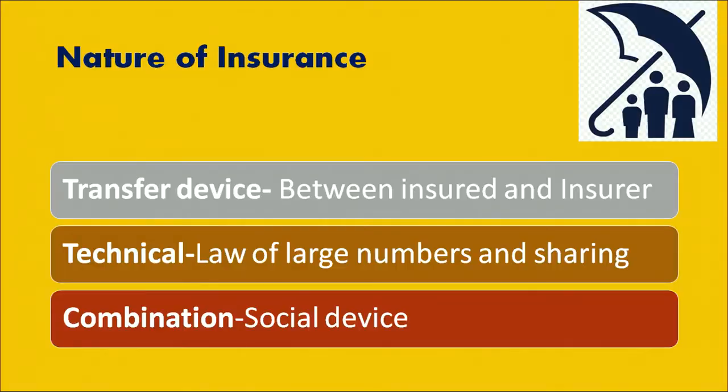The second school of thought says that insurance is a technical device. When I say insurance is a technical device, it talks about the law of large numbers and sharing. Insurance is based on averages. There will be so many people exposed to similar kinds of risks based on their age, occupation, or maybe their habits. Such people are clubbed together and covered under an insurance plan, and hence insurance works on the law of large numbers. It also works on sharing because this risk is shared amongst those people, and then we arrive at the premium amount.